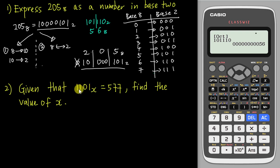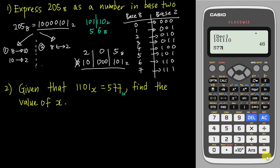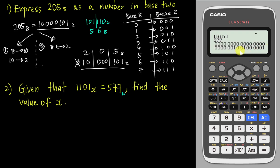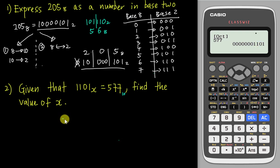Question 2: Given that 1101x base x equals 577 (base 10), find the value of x. Since no base is written on 577, it's base 10. Enter 577 in DEC mode, press Enter. Then check BIN — too many digits, not matching 1101. Check OCT — it gives 1101, so x equals 8.